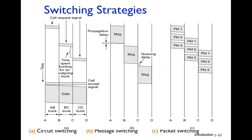In packet switching, a packet is stored at each router until it fully arrives before being forwarded. In circuit switching, once the circuit is established, even a single bit is moved directly without being stored. Packet switching introduces delay due to store-and-forward, whereas circuit switching is continuous with no such delay. This is a clear distinction between circuit switching and packet switching.